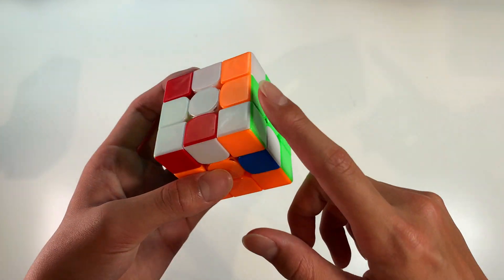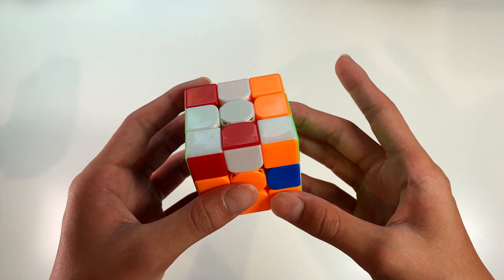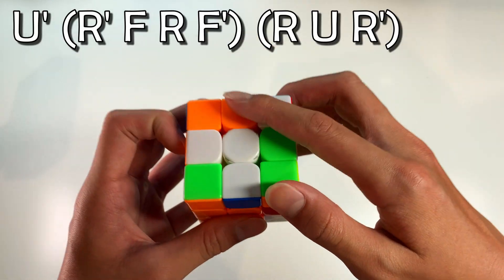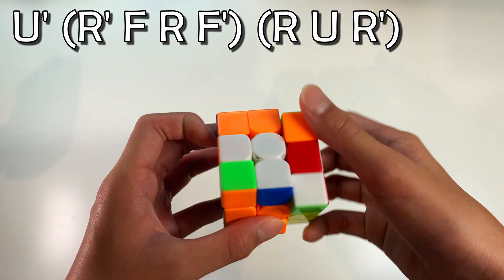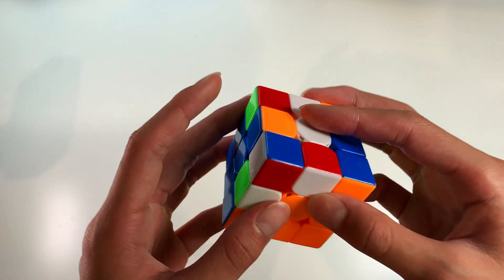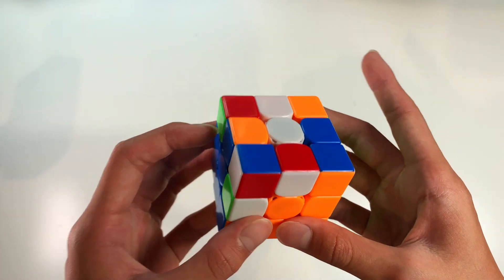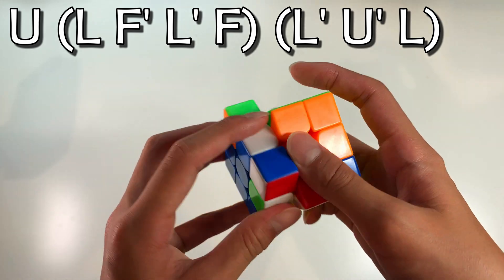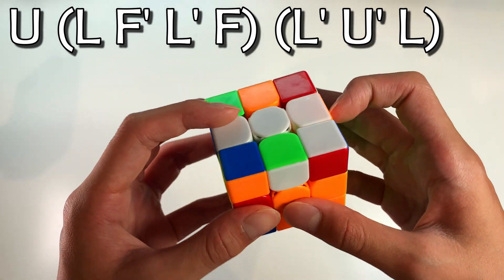If the corner is solved and the edge lines up on the right side, you move the edge all the way to the back and doing a sledgehammer will pair them up. Then you can just insert it as per normal. Same goes for the left slot. If the corner is solved on the left side and this color lines up here, you can do a U to move the pair to the back, sledgehammer with your left hand and then you have a three move insert.